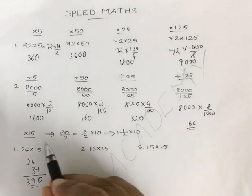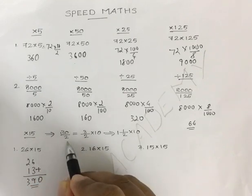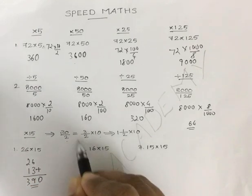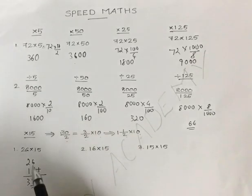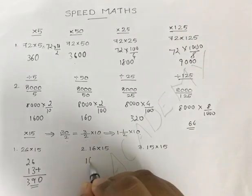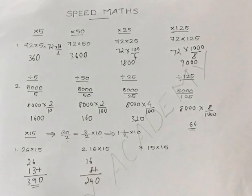The logic is that multiplying by 15 means multiplying by 30 by 2, or 3 by 2 into 10, which means it is 1.5 times into 10. So you add 1 time to half time and multiply with 10. Similarly, 16 into 15 — half of 16 is 8, you add that too, you get 24 into 10, which is 240.